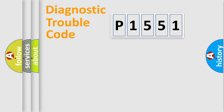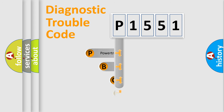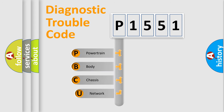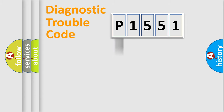Let's look at the history of diagnostic fault code composition according to the OBD2 protocol, which is unified for all automakers since 2000. We divide the electric system of an automobile into four basic units: powertrain, body, chassis, and network.